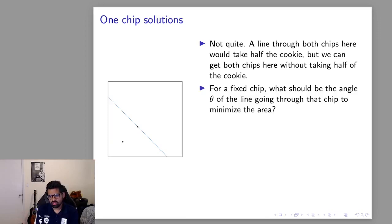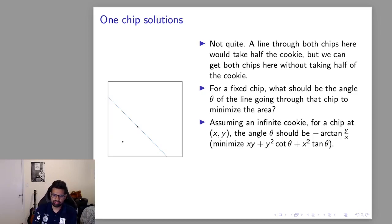So let theta be the angle that this line makes with the x-axis and let's temporarily say the cookie is infinite and it's just bounded by the x-axis, the y-axis and this line. Which theta should we pick to minimize the area of this line? I'm sure there's a geometric solution to this. I just kind of bashed it out with calculus and the angle theta should be negative arctan of y over x where (x,y) is the chip we're considering.